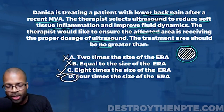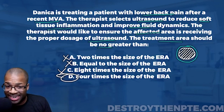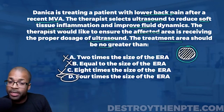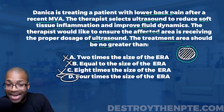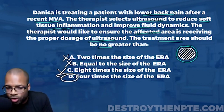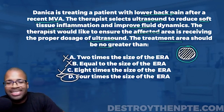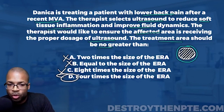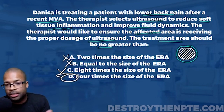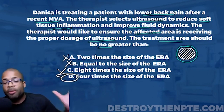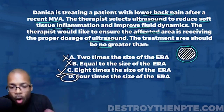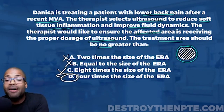Many of you selected A, and I understand why — two times the ERA is the ideal treatment area size. Just know the difference: ideal is two to three times the ERA, but the maximum is no greater than four times the ERA. Ultrasound is a sleeper topic on the NPTE, so make sure you go over these principles so you can apply them effectively on exam day.